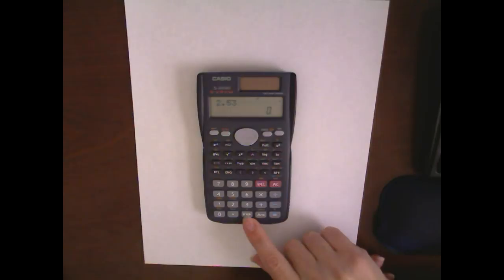Enter 2.53, then use your exponent button on a Casio—that's EXP—then 7. That's going to give you your number in scientific notation.